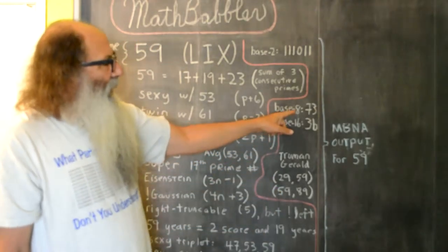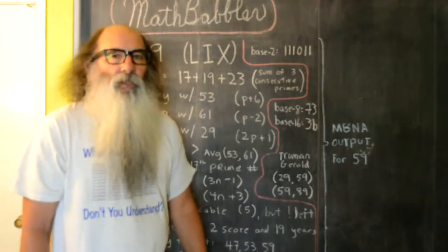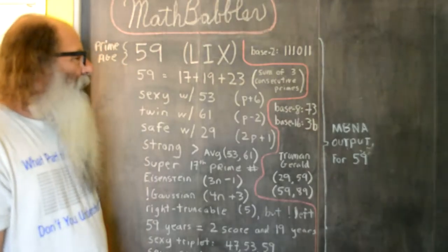In octal, base 8, 59 is 73. 7 and 3, those digits are prime numbers.